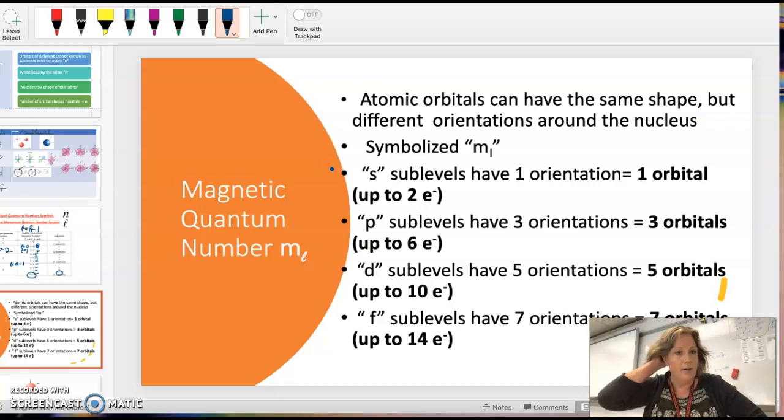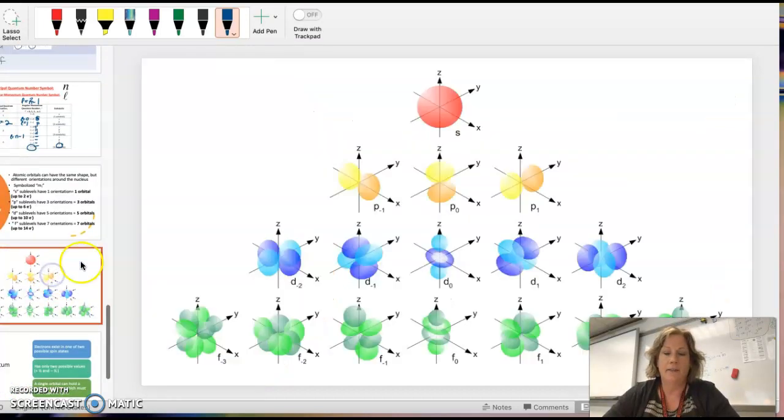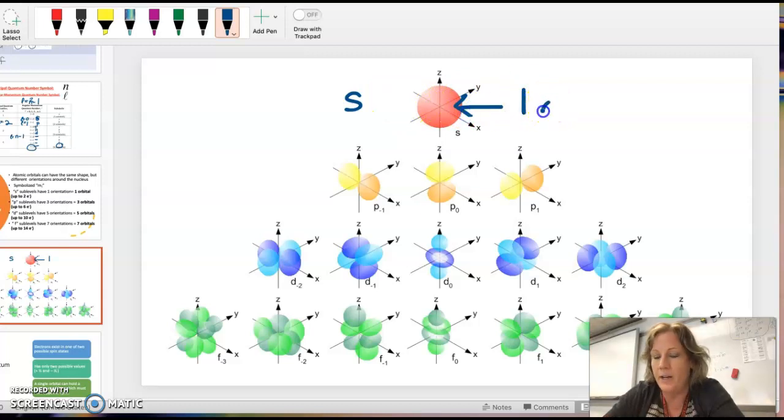The third quantum number is called the magnetic quantum number, M sub L, and this is just telling us the way that the different sublevel shapes can orient themselves in space. This one makes more sense if you look at this. An S, when you have S, it only has one way that it can orient itself. So it has what we call an orbital, one orbital. So it can hold up to two electrons.